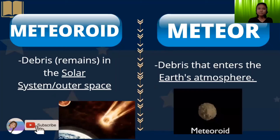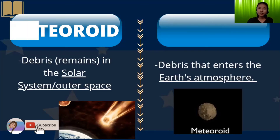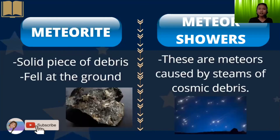Next, we have the difference between meteoroid and meteor. A meteoroid is debris or remains in the solar system or outer space. It will be called a meteor if the debris enters the Earth's atmosphere. Next, we have meteorite and meteor showers. Meteorites are solid pieces of debris that fell to the ground, while meteor showers are meteors caused by streams of cosmic debris.